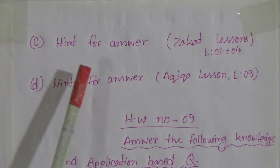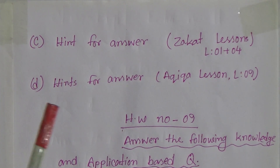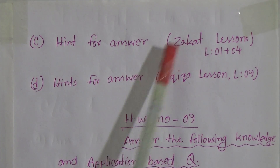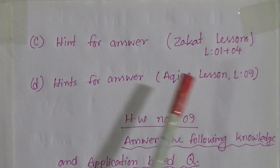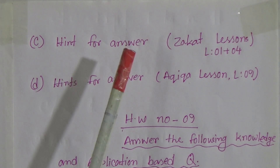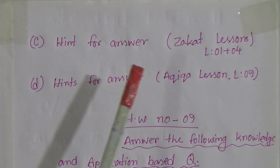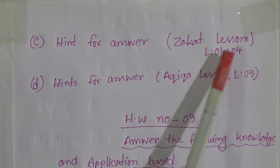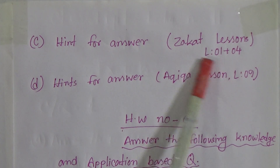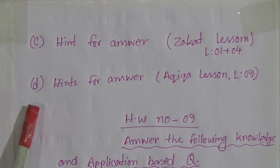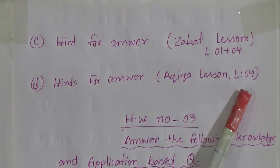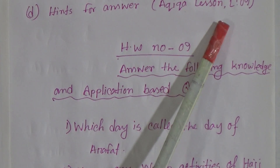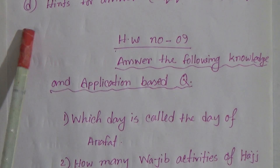Now come to CQ 1, C answer. For C, you will get the answer from the Zakat lessons in your book — Lesson 1 and 4. You can write it with the blending of your opinion and according to the stems. You have to give the answer using those two lessons. And for D answer, the hint is the Akika lesson — Lesson 9 in your book. You can get the answer from there.